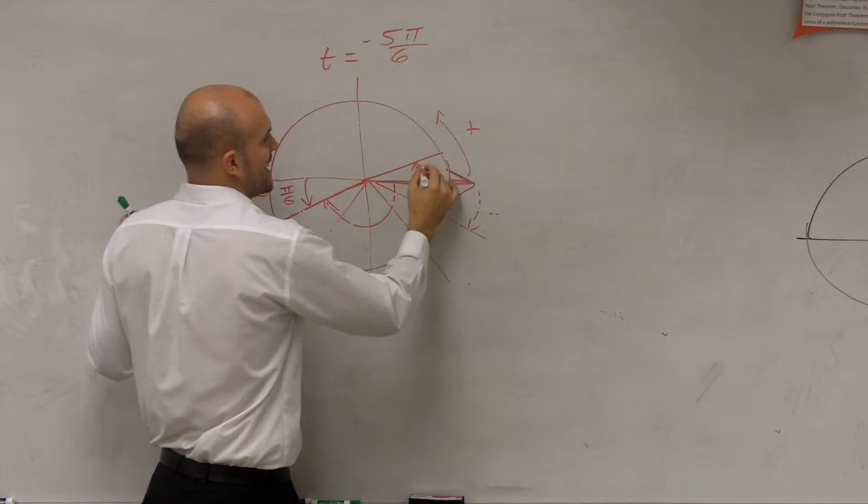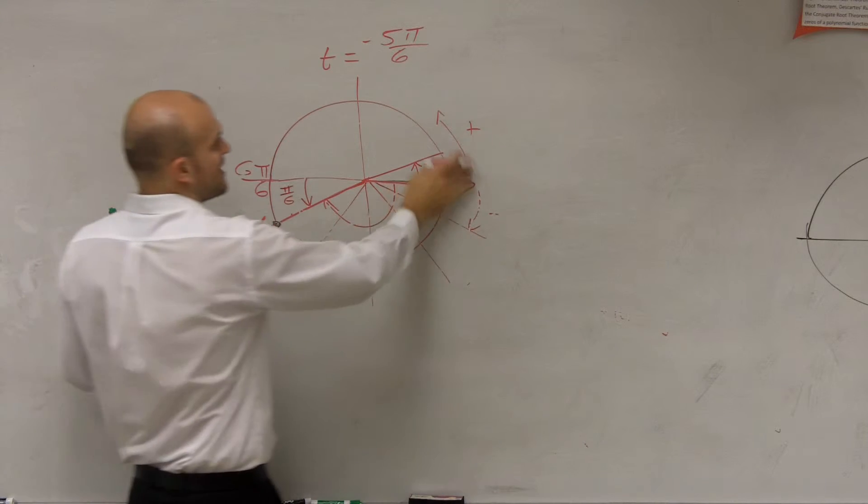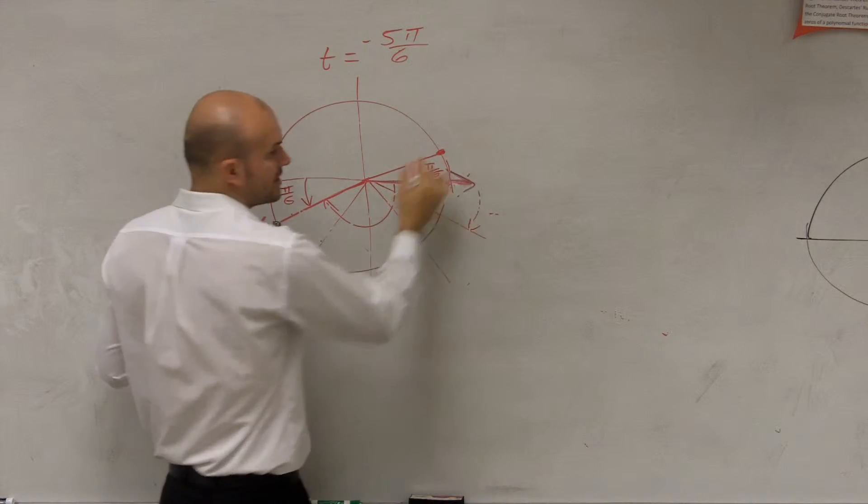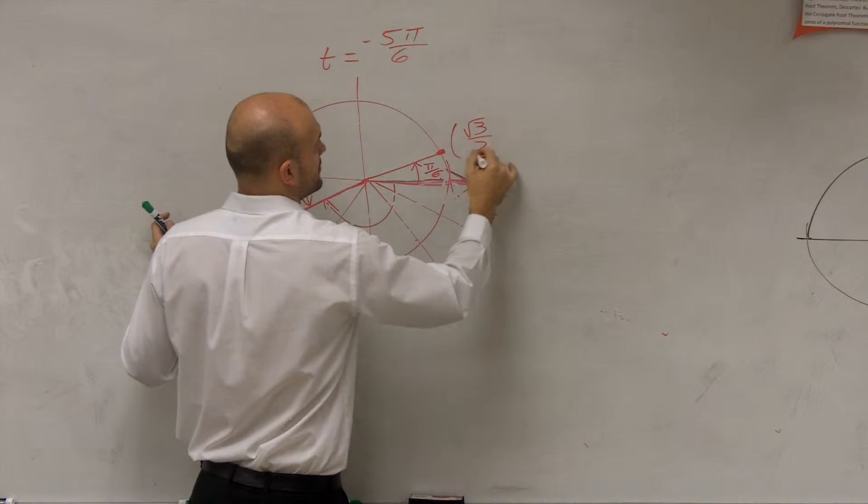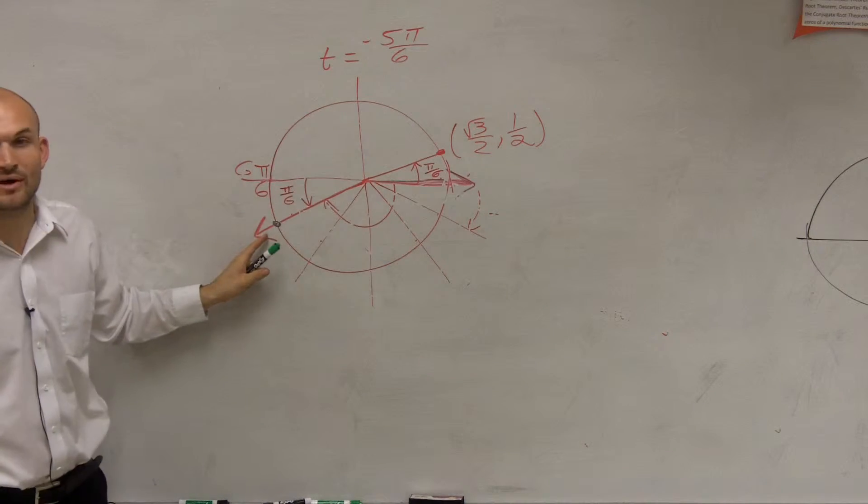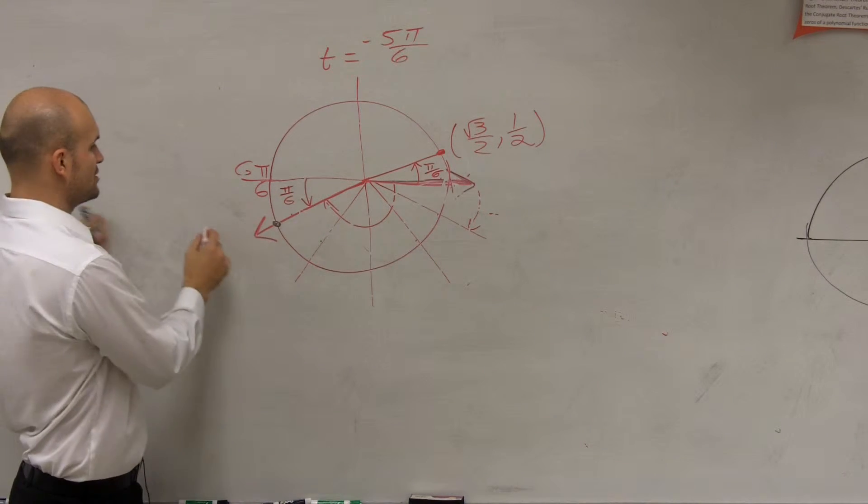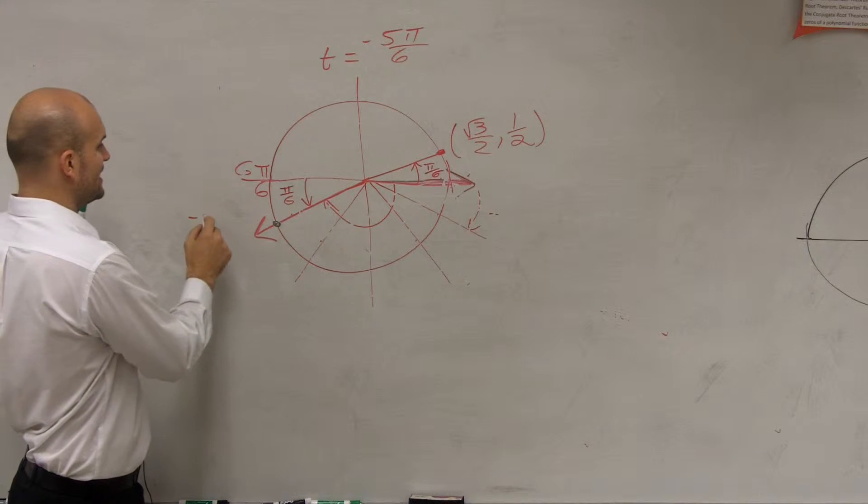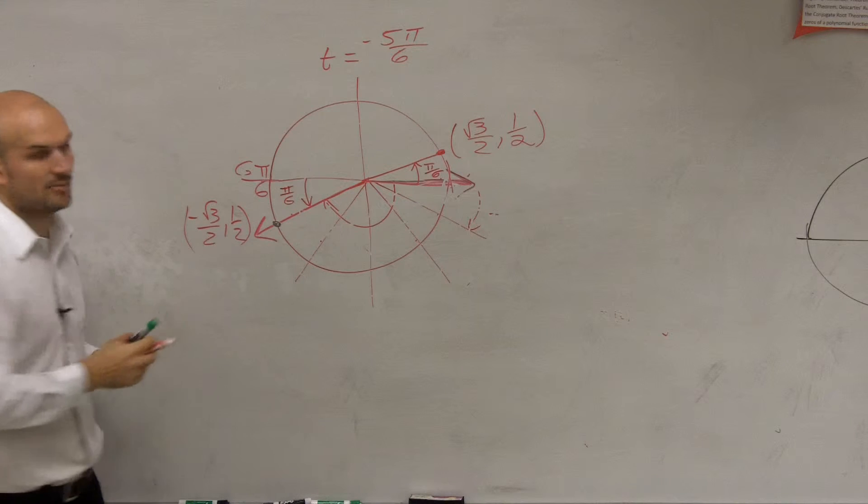So that means it corresponds to the angle, which is the first one, which is pi over 6. And that coordinate point in the first quadrant, we're going to have worked on, which is square root of 3 over 2 comma 1 half. So therefore, this point is going to be a reflection over the y and the x-axis. So this coordinate point is negative square root of 3 over 2 comma 1 half. Everybody follow me?